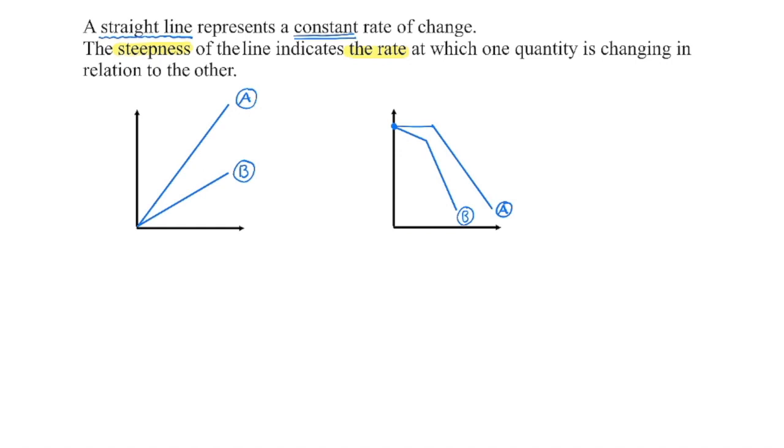If you guessed A, you are correct. A does have the faster rate of increase. And again, we don't know what the x-axis or the y-axis represent, but I'm going to assume the x-axis represents time. Because both of these lines started at the same place, if I pick a point in time, let's say this point, and go straight up.